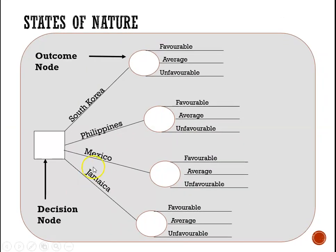Next we show our states of nature or outcome nodes. The circle represents the outcome node, and from the outcome node we show that the three possible outcomes are favorable, average, or unfavorable. That is the same for all decision choices — regardless of our decision, we will be facing three possible outcomes.